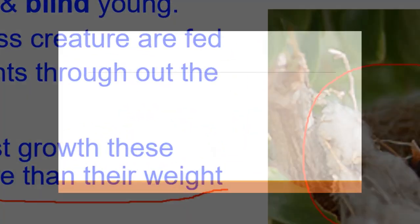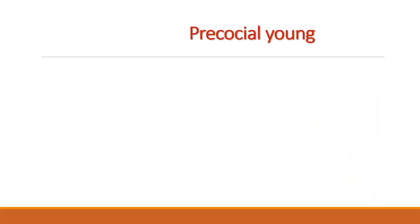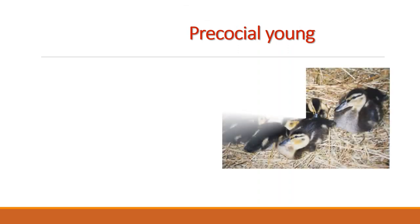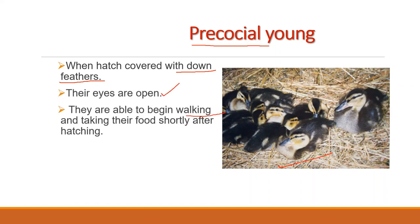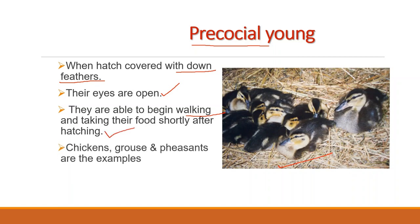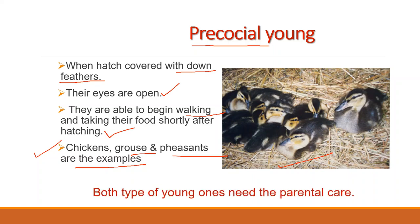Many other birds have their nests on the ground and would be more easily subjected to predation by enemies if they spent their early days in such a helpless condition as in altricial young. Such birds usually have precocial young which, when they hatch, are covered with down feathers, their eyes are open, and they are able to begin walking and taking their food shortly after hatching. Examples include chickens, grouse, pheasants, ducks, and loons. Both precocial and altricial young need care from the parents for some time after hatching.